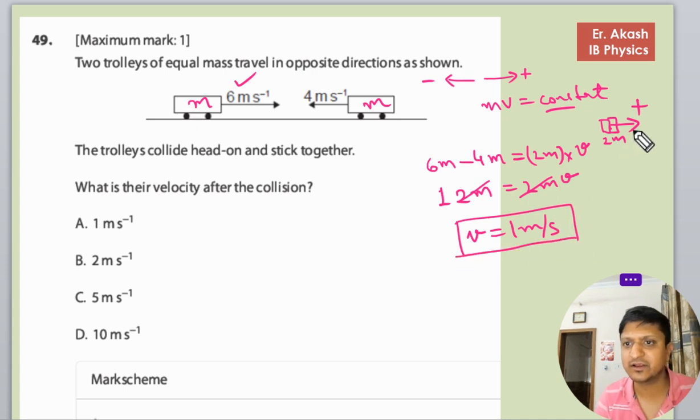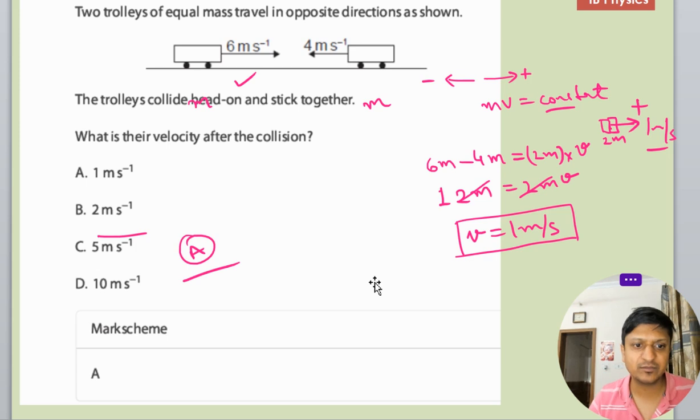So with 1 meter per second, both the bodies stick together, they will move with 1 meter per second. So this A option is the right option.